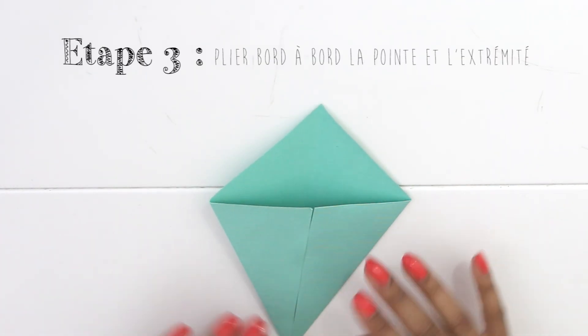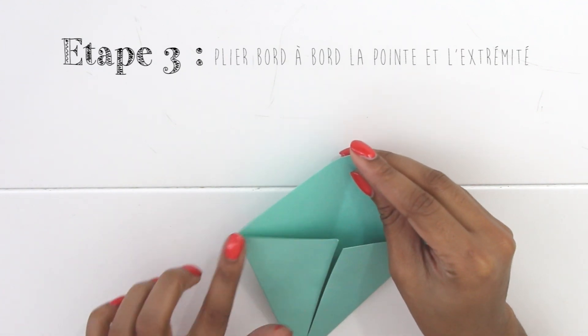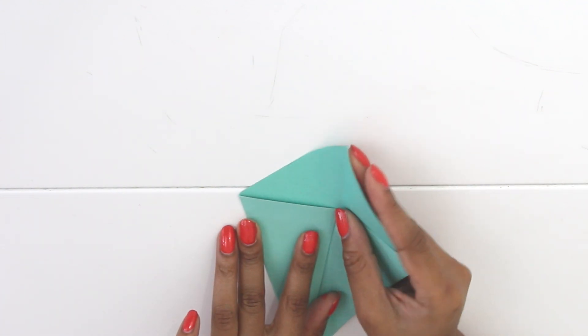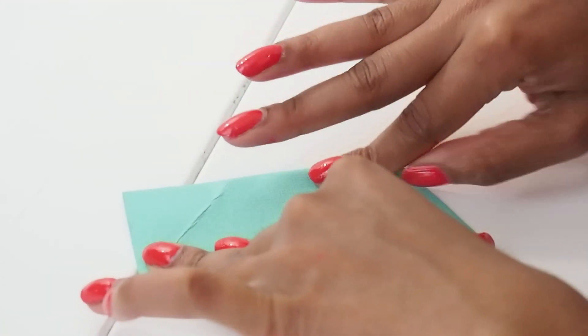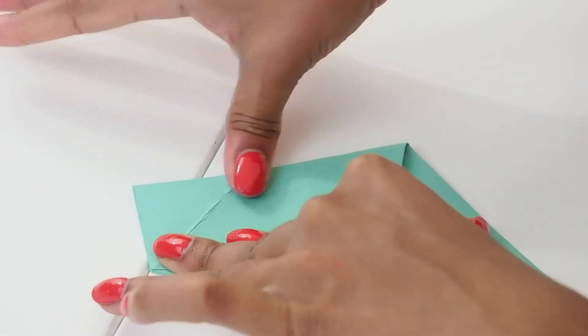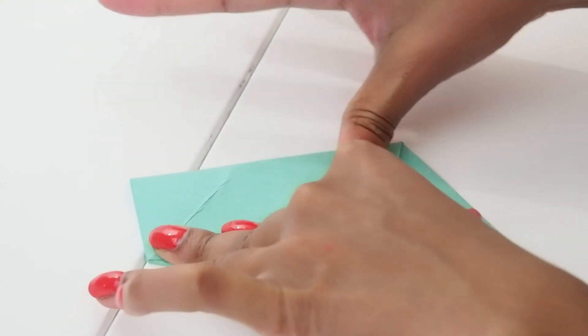So now we're going to fold the sides along the upper part. We're going to fold the sides along the other side.